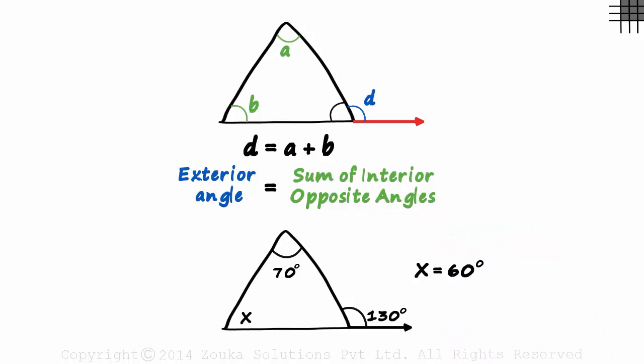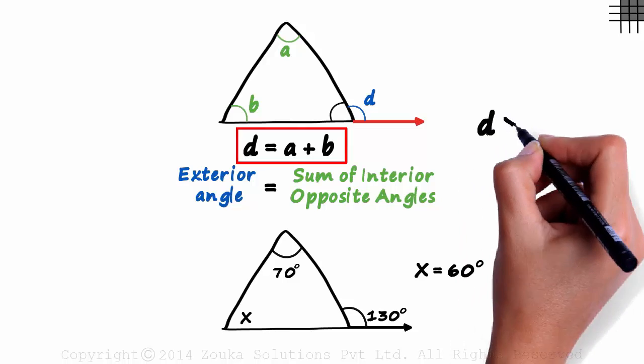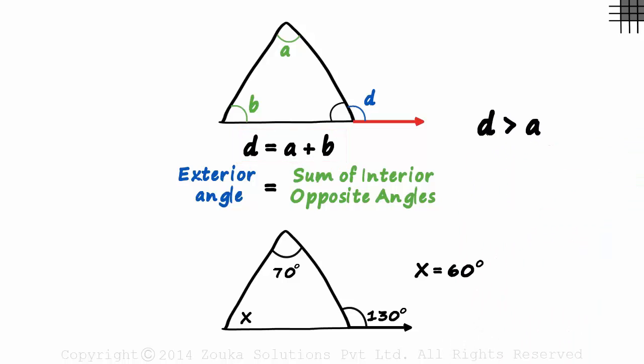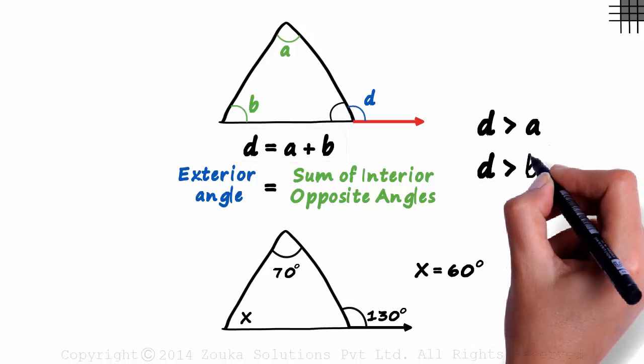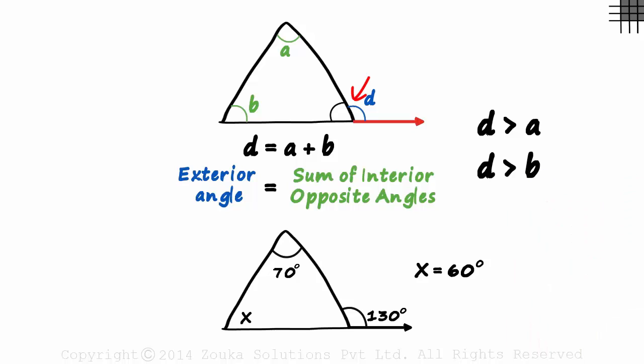In fact, there is another thing we can deduce looking at D is equal to A plus B. D will always be greater than A and D will also be greater than B. The exterior angle will always be greater than each of its interior angles.